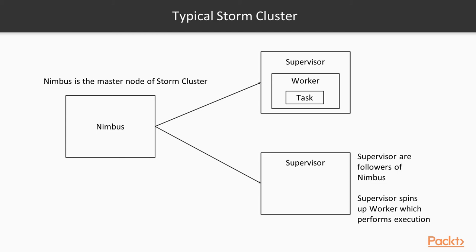Workers internally create executors and ask the executors to perform a particular task. There is something called a task that you need to understand — a task is nothing but a thread, and that thread is executed by the executor. The executor is managed by the worker, the worker is managed by the supervisor, and finally the supervisor is managed by the Nimbus.